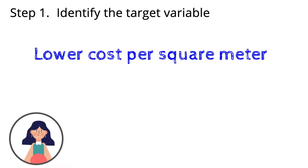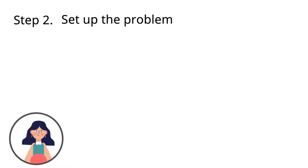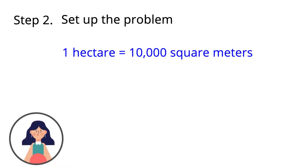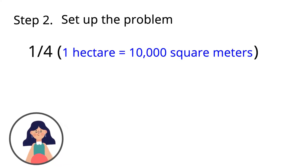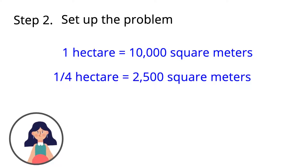But before that, we need to know the equivalent square meters of one quarter of a hectare. Step number two: set up the problem. Knowing that one hectare is equivalent to 10,000 square meters, one quarter of a hectare is 2,500 square meters.